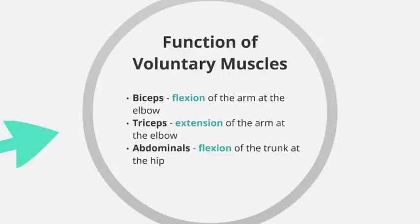The abdominals, when they contract, are responsible for flexion of the trunk at the hip — basically bending over at the hip. A good example in sport would be at the start of a swimming race, when you're on the blocks in that crouched position ready to start the race.